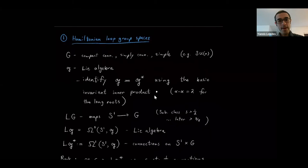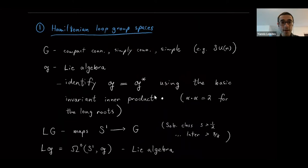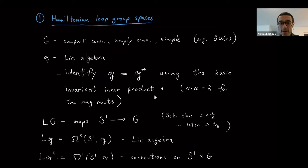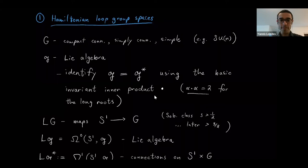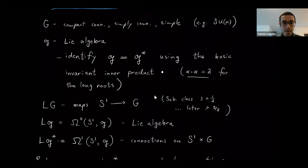I'll start by reviewing Hamiltonian loop group spaces, as Eckert talked about this yesterday. I'm going to fix a compact connected, simply connected and simple Lie group G — an example is SU(N) — and Gothic G is the Lie algebra. Up to a scale factor, there's a unique ad-invariant inner product on the Lie algebra. There's a unique one with the requirement that the dot product of a long root with itself is two. This is called the basic inner product, and I'm going to use that to identify G and G-star throughout the talk.